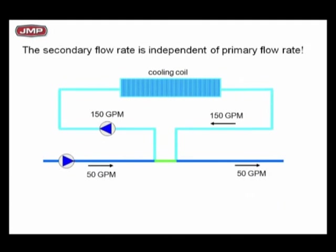Now let's go to the other extreme. We still have 150 GPM in our secondary flow — we haven't changed it. But look at your primary flow: we reduced it from 200 down to 50 GPM. We've got 50 GPM in the primary, 150 in the secondary — we didn't change the flow rate in the secondary by doing this. But what happened in the common pipe? We've got 100 GPM of reverse flow now going back the other way. So now you've been through all the examples of the T-law. What changes is the direction and the amount of flow in the common pipe.